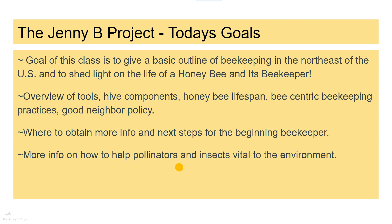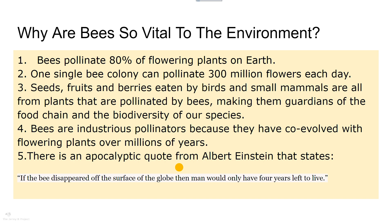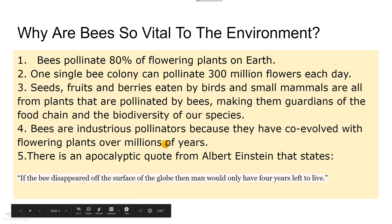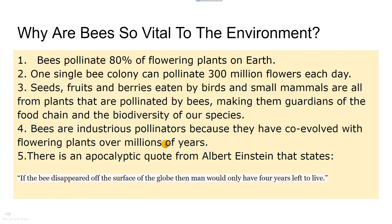If beekeeping isn't for you, there are other options like mason beehives, bug hotels, and planting to help pollinators. Bees are vital to the environment — they pollinate 80% of the flowering plants on earth. A single bee colony can pollinate 300 million flowers each day. Seeds, fruits, and berries eaten by birds and small animals come from plants pollinated by bees. Albert Einstein is often quoted: 'If the bee disappeared off the surface of the globe, man would only have four years left to live.'